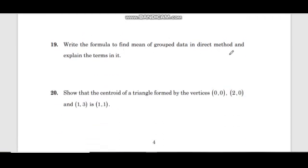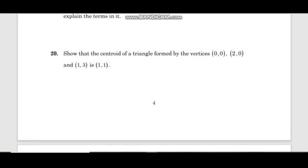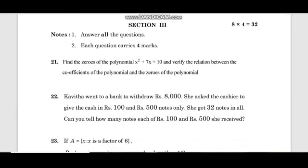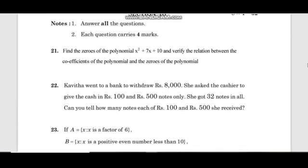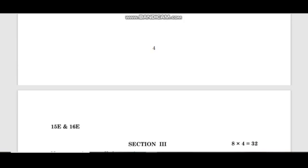Write the formula to find mean of grouped data in direct method and explain its terms. Show that the centroid of a triangle formed by the vertices (0, 0), (2, 0), and (1, 3) is (1, 1). Use the centroid formula: (x1 plus x2 plus x3 by 3, y1 plus y2 plus y3 by 3).